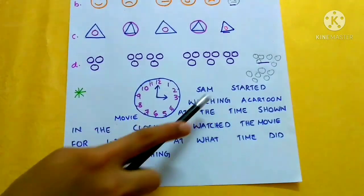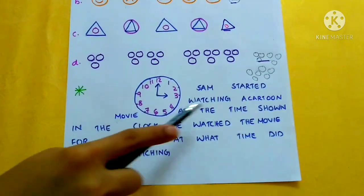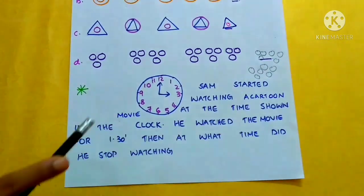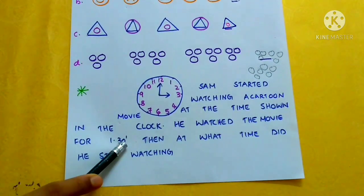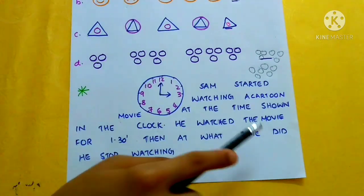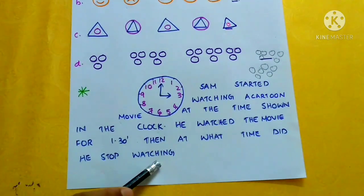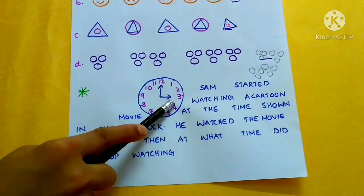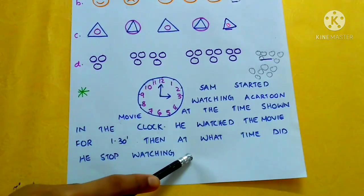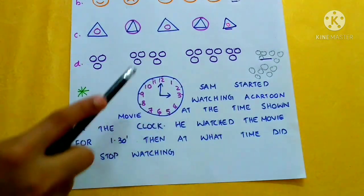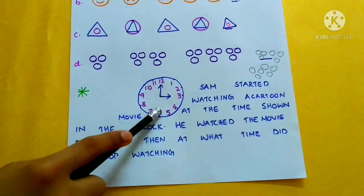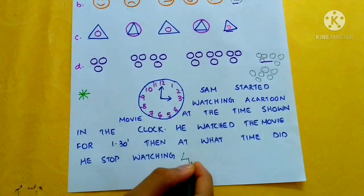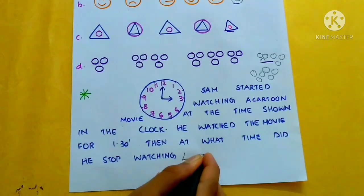Sam started watching a cartoon movie at the time shown in the clock. He watched the movie for 1 hour 30 minutes. At what time did he stop watching? He started watching at 3 o'clock. So after 1 hour it becomes 4. After half an hour more, it becomes 4:30. So he stopped watching the cartoon movie at 4:30.